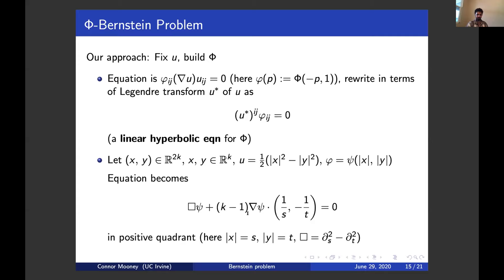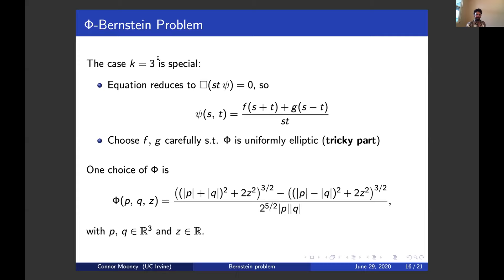So far, nothing special about R6 has come into the picture, but at this stage it will. The coefficient k minus one is very important in the analysis. When we plug in k equals three — so R6 — the structure becomes extremely special: the equation reduces to the classic wave equation. It becomes the wave operator on st times psi equals zero. So we have very explicit representation formulae for solutions: we can write down psi explicitly as the sum of two traveling waves using the classic d'Alembert formula, divided by s times t — a quadratic polynomial.